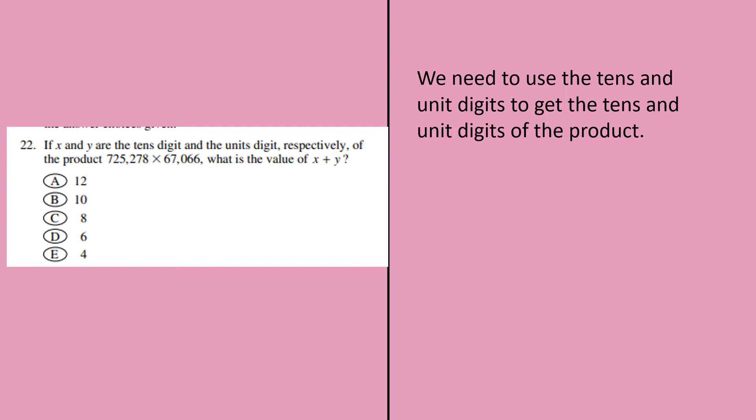We need to use the tens and units digits to get the tens and units digits of the product. So let us take 78 times 66. Instead of taking the whole product, let us take only the tens and units digits in this product. So that product gives me 5148. And in this final result, my tens digit and the units digit is 4 and 8.